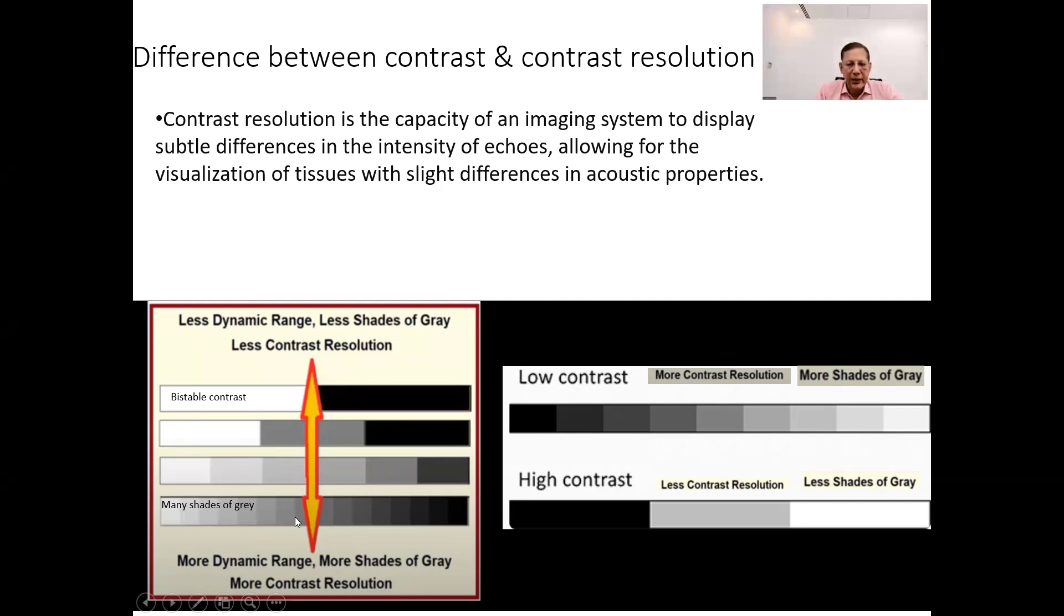Putting these two adjacent shades of gray next to each other with not a big difference in their echogenicity, and probably we can say they are of similar echogenicity. So we will say this is a low contrast image from the photography point of view, but a high contrast resolution.